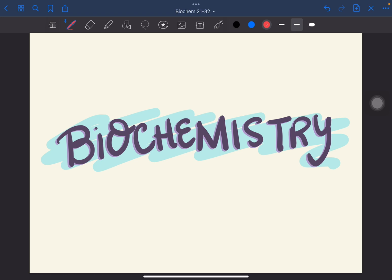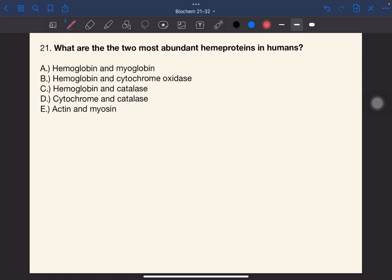This video is part 3 of the Biochemistry Board Exam series. Number 21. What are the two most abundant heme proteins in humans?